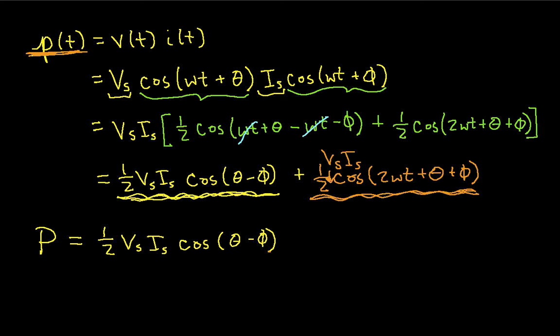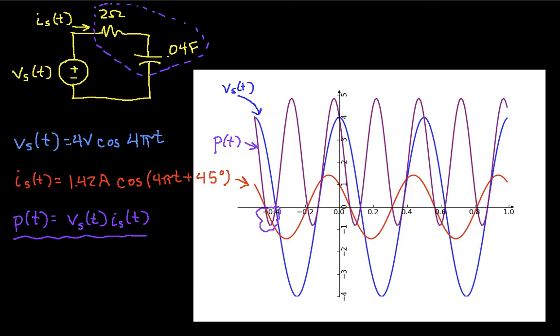So what this tells us then is that the average power depends on the voltage and the current magnitude. And it depends on the phase difference between the voltage and the current. If we go back to our plot, you can see this. You basically can see that the power, this purple graph, has an average value that turns out to be 2. And so that part stays constant. And then if you look at the time that it's above 2 and the time that it's below 2, that part averages out. So the average power, in this case, is 2.